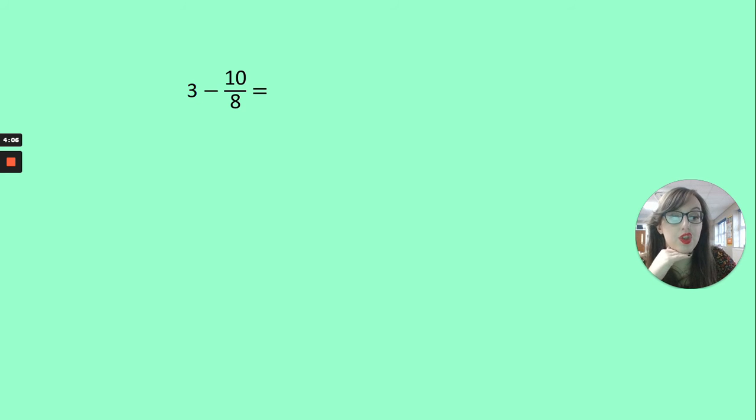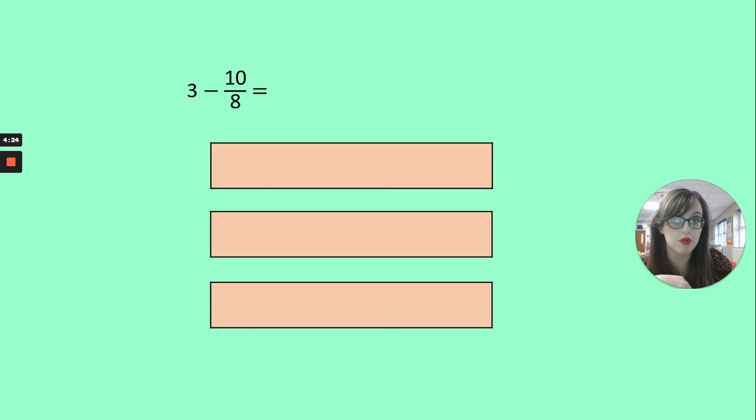Now we've got 3 holes and 10 eighths. Before I can do anything, I need to imagine my holes and turn them into fractions. How many eighths do you think we will have in 3 holes? Pause and have a think. So, here are my 3 holes. I'm going to split the bottom one into eighths.